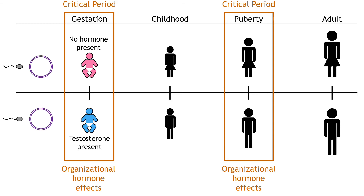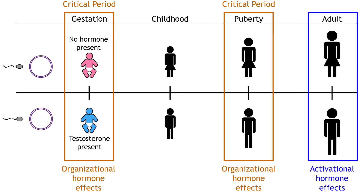Organizational effects of hormones lead to major, generally irreversible aspects of cell and tissue differentiation. Organizational effects take place during critical periods like prenatal development and puberty. In adulthood, the same hormones trigger physiological or behavioral responses like inducing reproductive behavior or ovulation, but these influences, called activational effects, are reversible and short-lived.